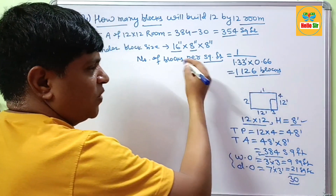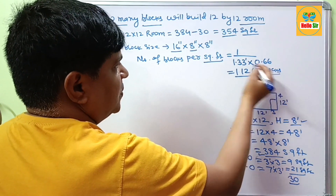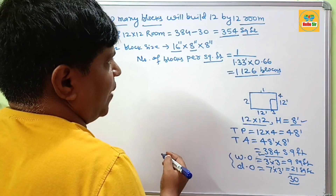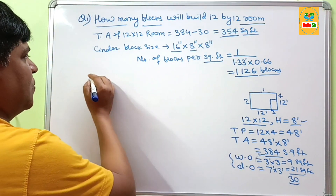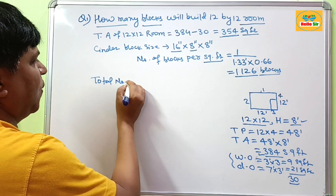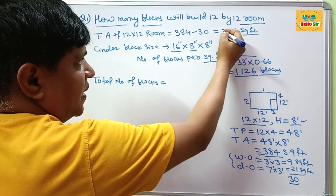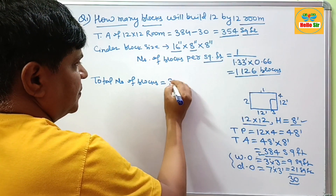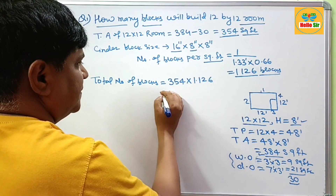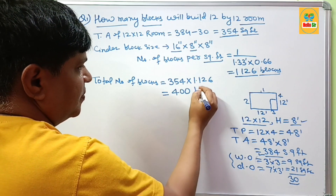Remember: there are 1.126 cinder blocks per square foot. Your total wall area needed is 354 square feet. So the total number of blocks equals 354 multiplied by 1.126, which comes to approximately 400 blocks.